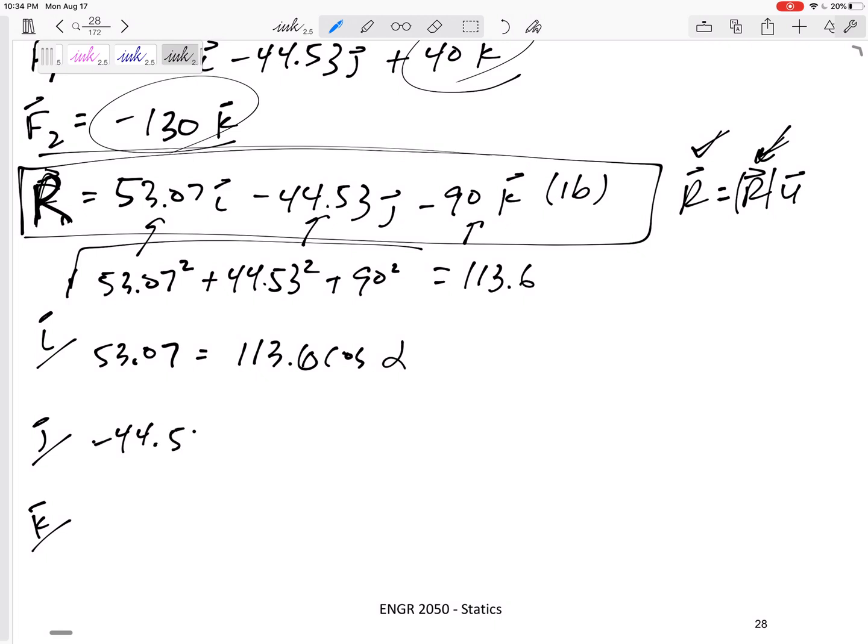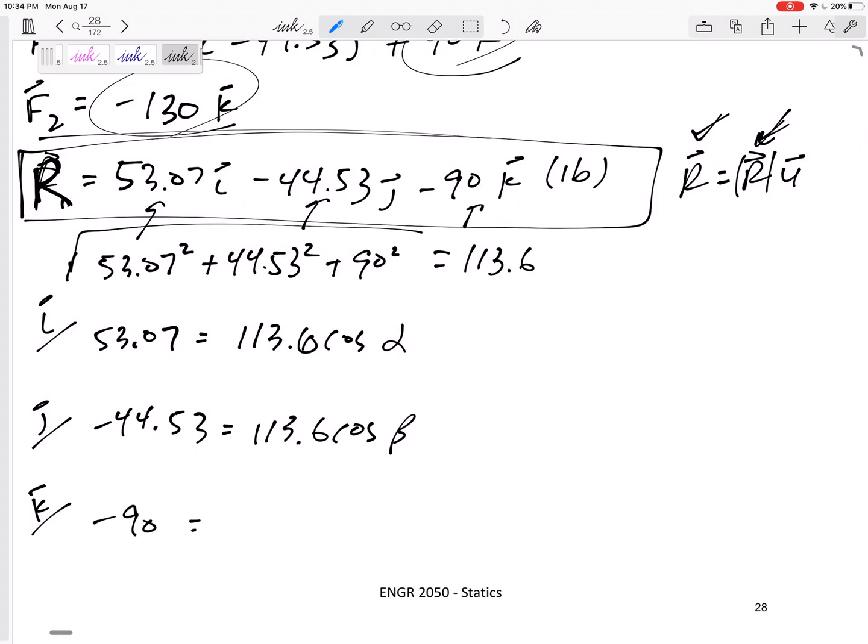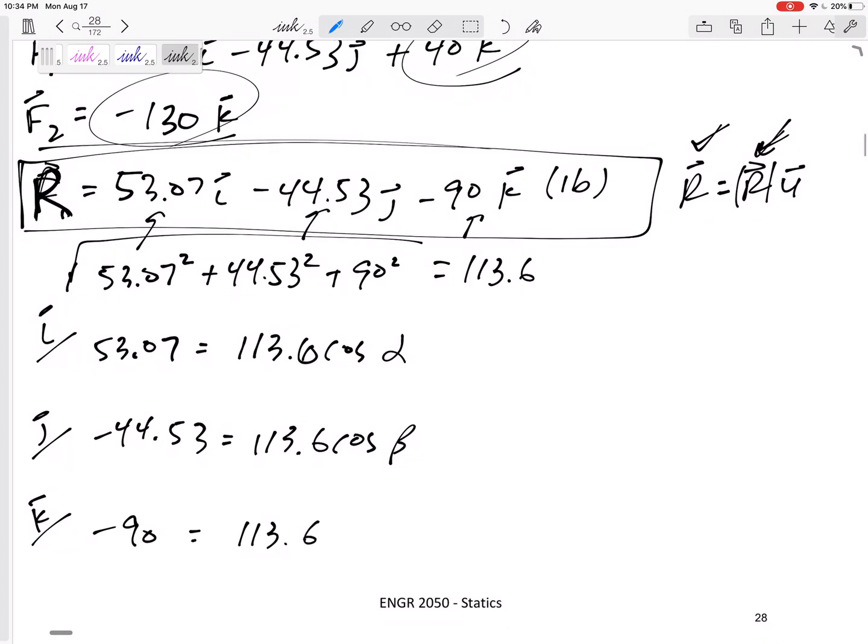Negative 44.53 equals 113.6 cosine beta, and negative 90 equals 113.6 cosine gamma. And get alpha, beta, gamma: 62.1, 113.1, 142.4 degrees. Those are your answers.